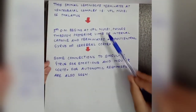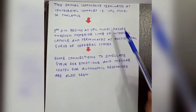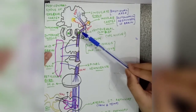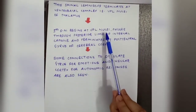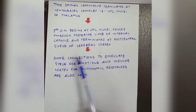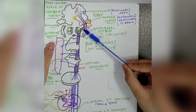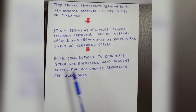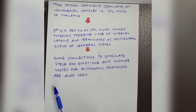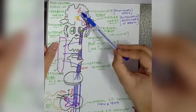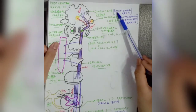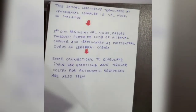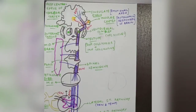The spinal lemniscus terminates in the ventrobasal complex, that is the ventroposterolateral nucleus of the thalamus. The third order neuron begins at the ventroposterolateral nuclei, passes through the posterior limb of the internal capsule, and terminates at the postcentral gyrus of the cerebral cortex. Additionally, some connections to the cingulate gyrus for emotions and to the insular cortex for autonomic responses are also present. This concludes the entire anterolateral spinothalamic pathway.